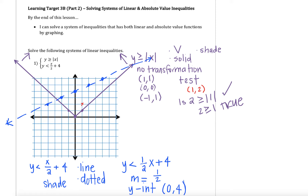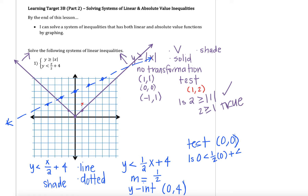I'm going to make sure I extend the graph all the way. We can shade inside the V, but I still have to figure out what's going on with the blue line. The next step is to test a point. For our linear function, I can actually test (0,0) since that graph does not run through the origin. When I test (0,0), I'm asking: is 0 less than one-half times 0 plus 4? Simplifying, I get 0 less than 4 — that is a true statement. So I want to shade towards my test point, which means shading below the blue line.